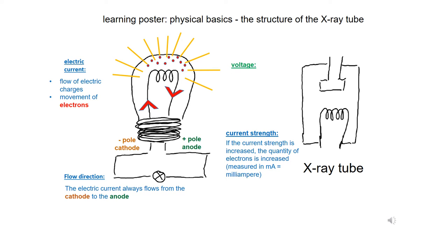The voltage of the electric current is the cause of the electric current. That means for the flow of electrons, if the voltage is increased, the speed of the electrons is increased, measured in volts.